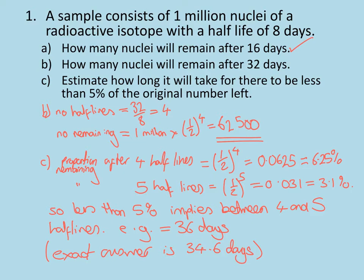Part C is a trickier one: how long will it take for there to be less than 5% of the original number of nuclei left? This requires trial and error. A half to the power four gives 0.0625, which is 6.25%. A half to the power five gives 0.031, or 3.1% of the original. So less than 5% implies it's between four and five half-lives — you might estimate it at 36 days. With A-level maths using logarithms you can find the exact answer of 34.6 days, but that's beyond GCSE physics.